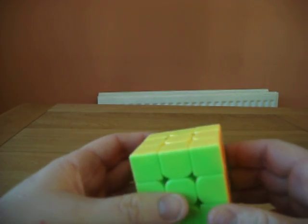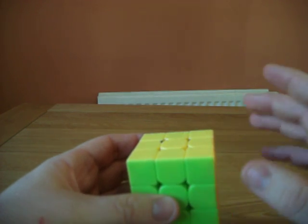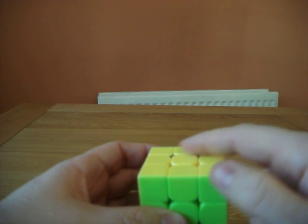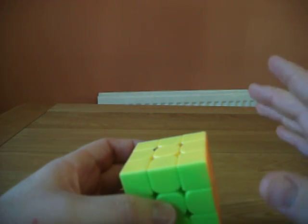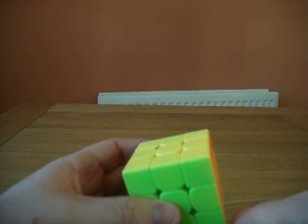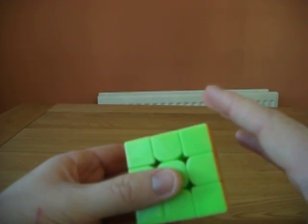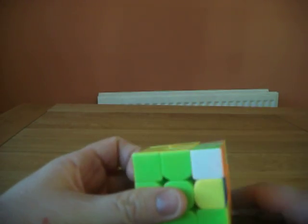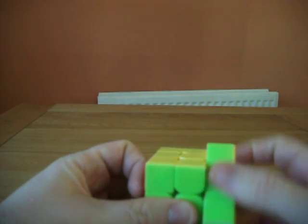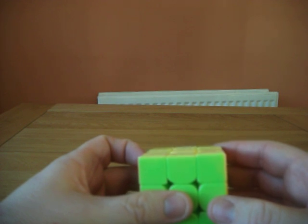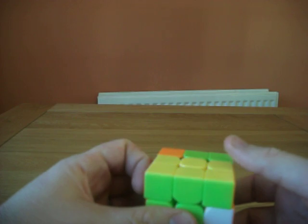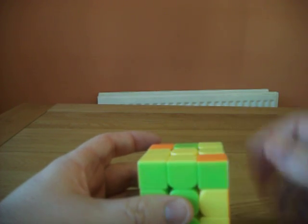So what we have here is we have an algorithm that, after three iterations, all the edges will return to the same position, and after six iterations, all the corners will return to the same situation. Now, this algorithm, obviously you can do it forwards, and if you do it backwards, which is, I'll do that one more time, which is clockwise, still clockwise, clockwise, anti-clockwise, anti-clockwise, but you start with a U-face.